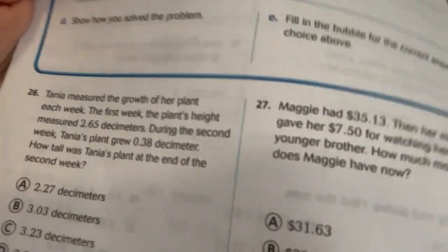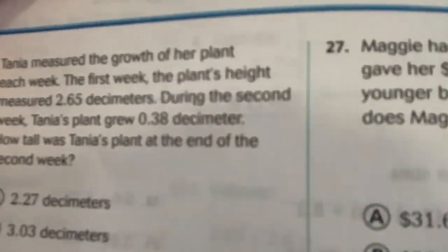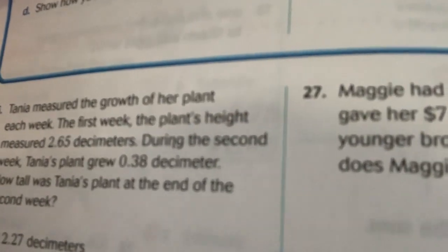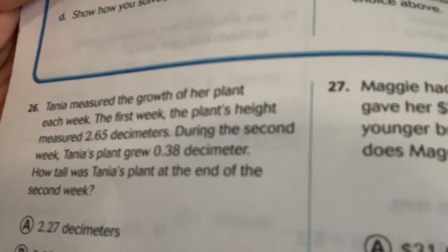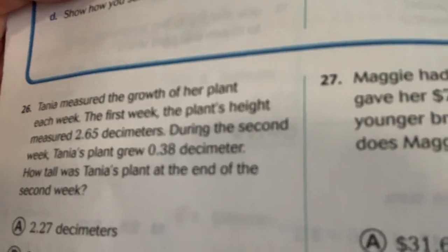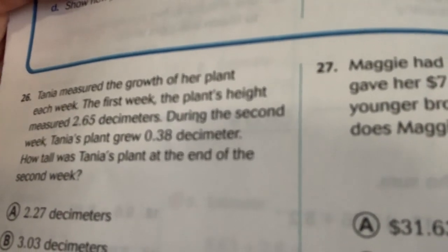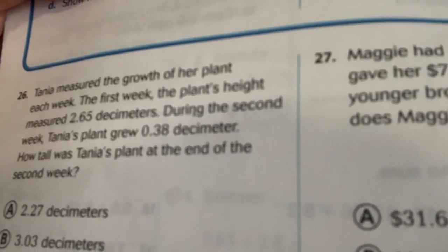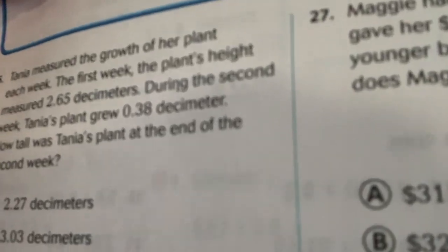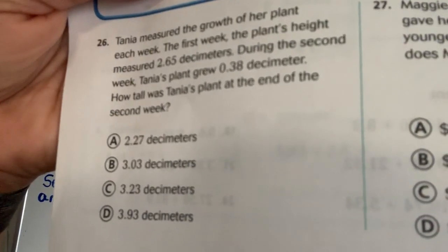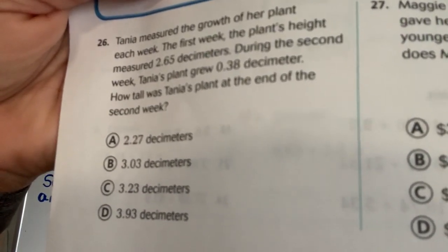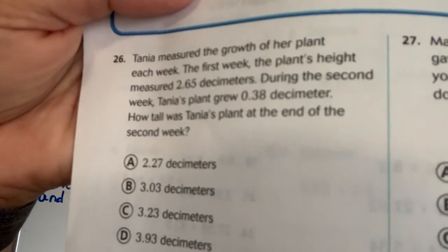Now, before we start, I want to start you out with this question, right here. Let's look at this one. Tania measured the growth of her plant. Each week, the first week, the plant's height measured 2 and 6,500 decimeters. During the second week, Tania's plants grew 3,800 decimeters. How tall was Tania's plant at the end of the second week? And these are your choices: A, B, C, or D. If you have your notebook close to your piece of paper, you can add those two numbers together, and then you can go ahead and tell me what you got.